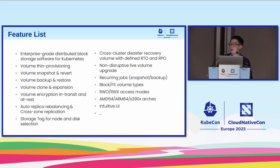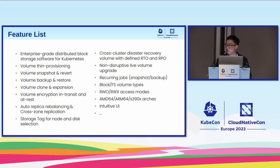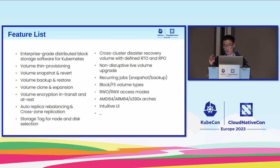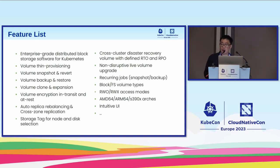People have been asking whether Longhorn provides encryption — yes, we provide encryption based on Kubernetes secret resources to supply credentials and encrypt your volume. Because Longhorn is a distributed block system, every IO is encrypted on the fly. We call it encryption-at-transit. And at the end it steps into a replica, so it's also at-rest. This was introduced in version 1.2.